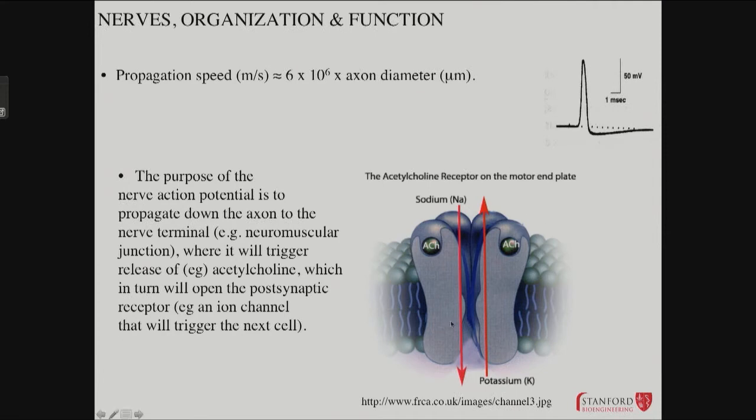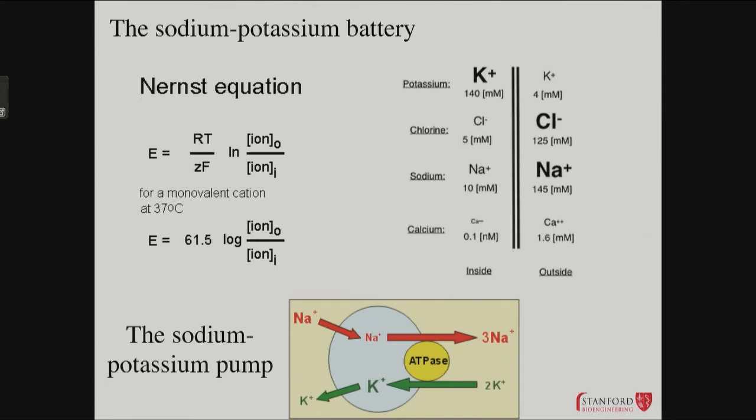Those ions are going down their electrochemical gradients, and those gradients are set up in an energy intensive way. This is the sodium-potassium pump that sets up those gradients. It pumps sodium out and potassium in. You get three sodiums out for every two potassiums in, and it uses an ATP for each cycle. This is a huge energetic cost to maintain these gradients, but that creates the capability for dynamics. When the pore opens, these ions run down their gradients, and that creates the depolarization needed.